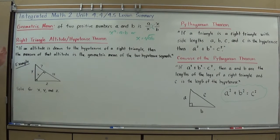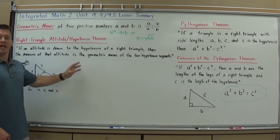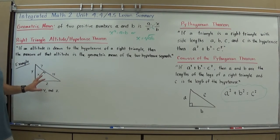One states that if an altitude is drawn to the hypotenuse of a right triangle, so I took the right triangle angle and drew an altitude towards the hypotenuse, then the measure of that altitude is the geometric mean of the two hypotenuse segments. That's one of them.